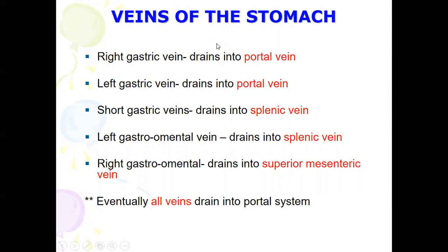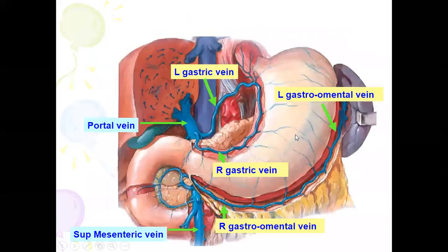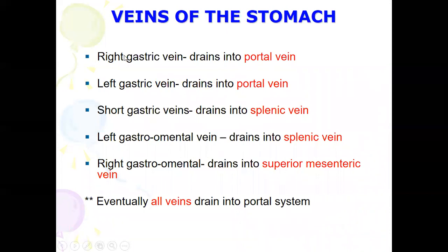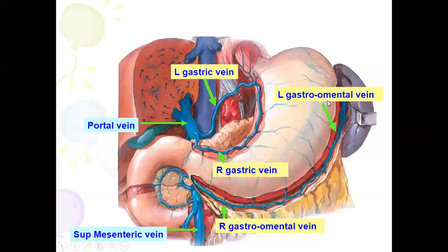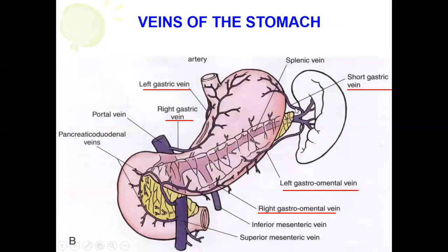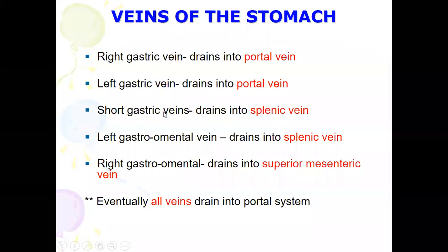The right gastric vein drains into the portal vein. The left gastric vein also drains into the portal vein. The short gastric vein drains into the splenic vein. The left gastro-omental vein also drains into the splenic vein.